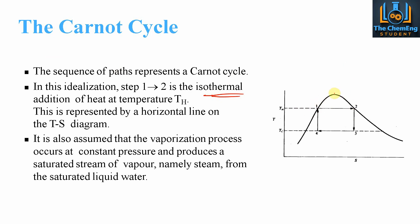On the TS diagram, the saturation line divides regions: anything to the left of the curve is liquid; inside the curve is a mixture of saturated liquid and vapor; above and to the right of the curve is saturated vapor with no liquid present; and in the far left region we would have 100% liquid with no vapor.